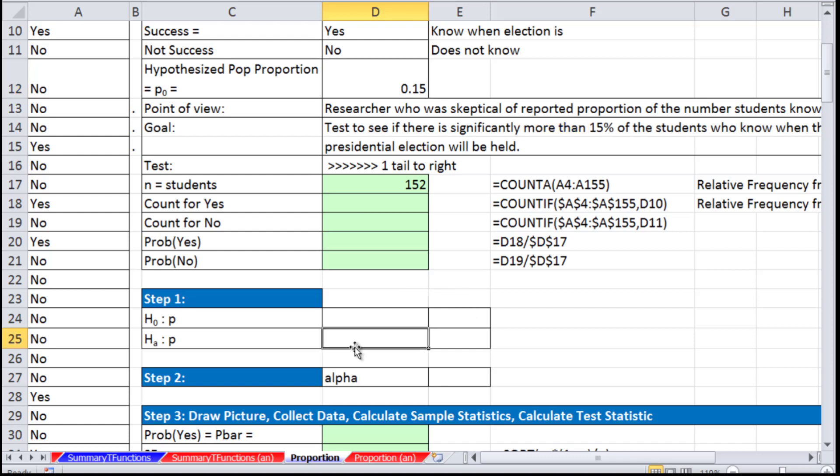I'm going to come right down to the alternative. Is the proportion greater than 15%? Once we know the alternative, we go up to the null hypothesis and flip it. Less than or equal to—the equal sign always goes with the null hypothesis.